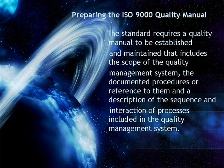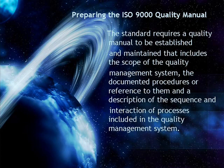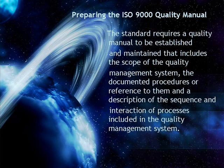ISO 9000 standard defines a quality manual as a document specifying the quality management system of an organization. It is therefore not intended that the manual be a response to the requirements of ISO 9001 standards. As the top-level document describing the management system, it is a system description describing how the organization is managed. Countless quality manuals produced to satisfy ISO 9000-2008 were no more than 20 sections that paraphrase the requirements of the standards. Such documentation adds no value.